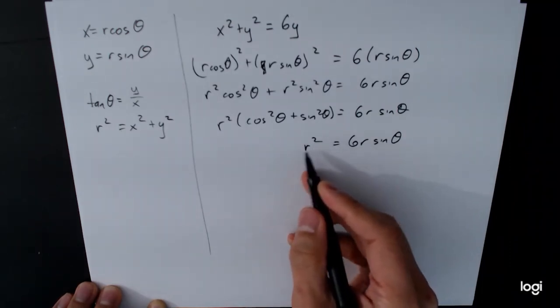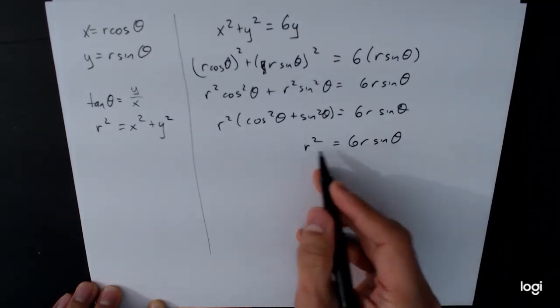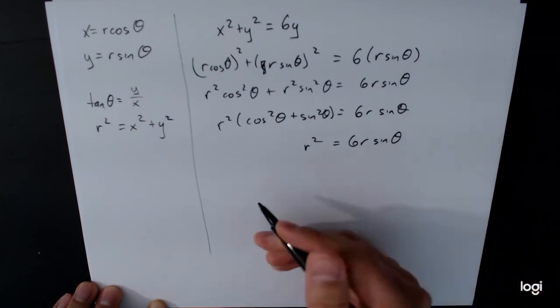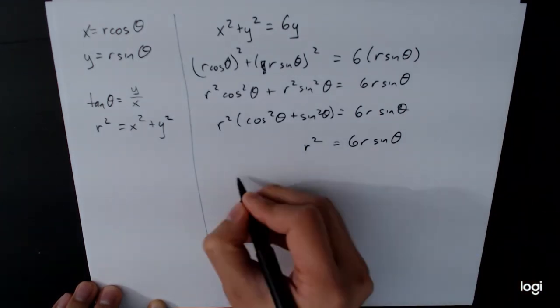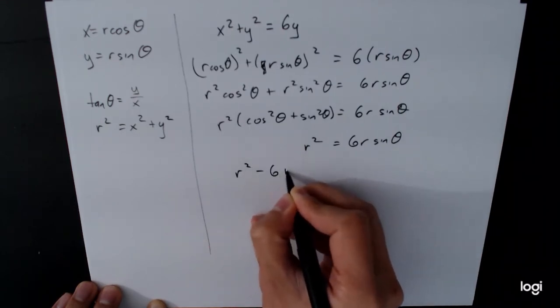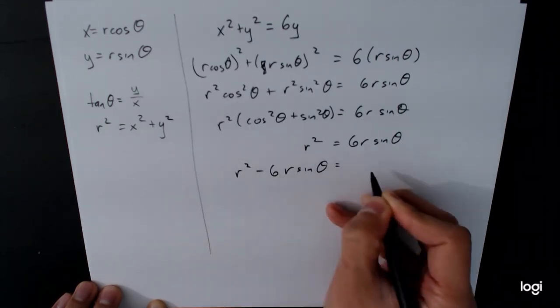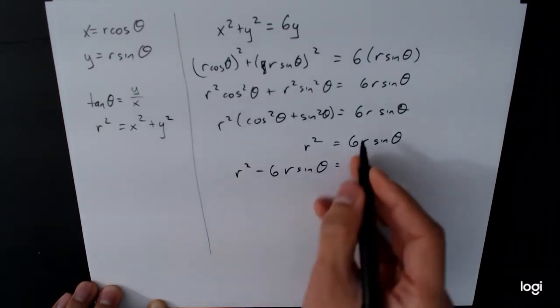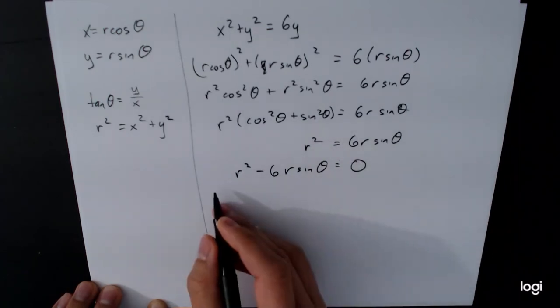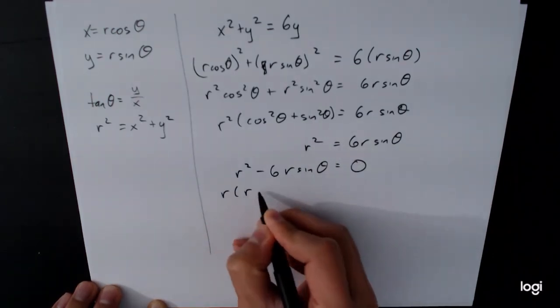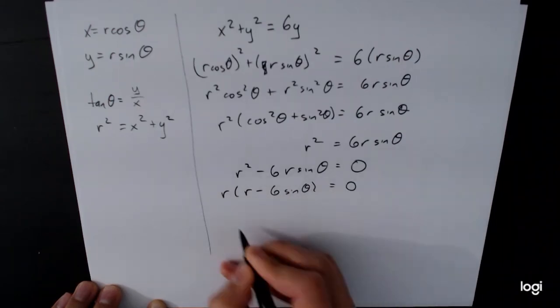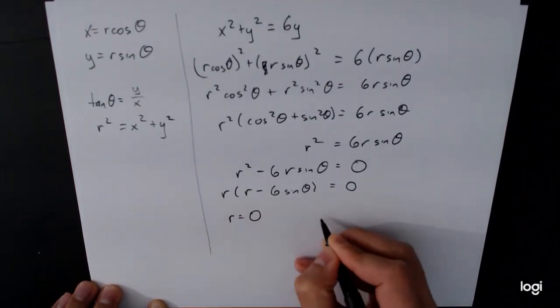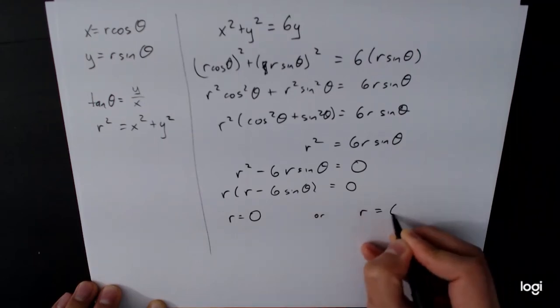You could technically try to divide this by r. You do have to worry about dividing by zero. So the better thing to do is actually this: instead of dividing by a variable, it's always better to move everything to one side and then factor that variable out instead. And then use the zero product property. Either r is equal to zero or r is equal to 6 sine theta.